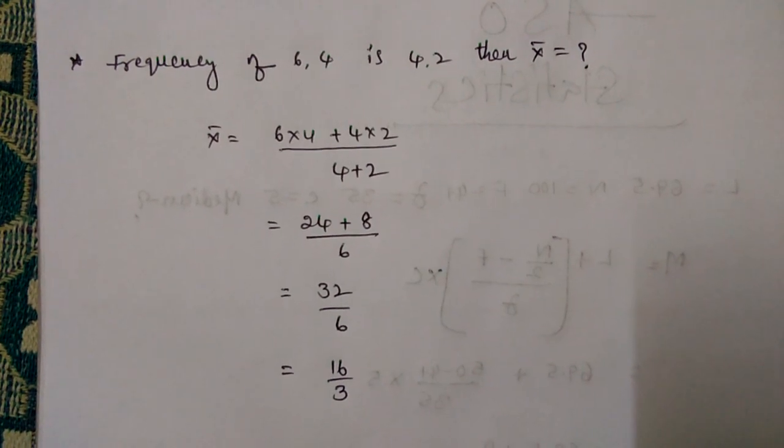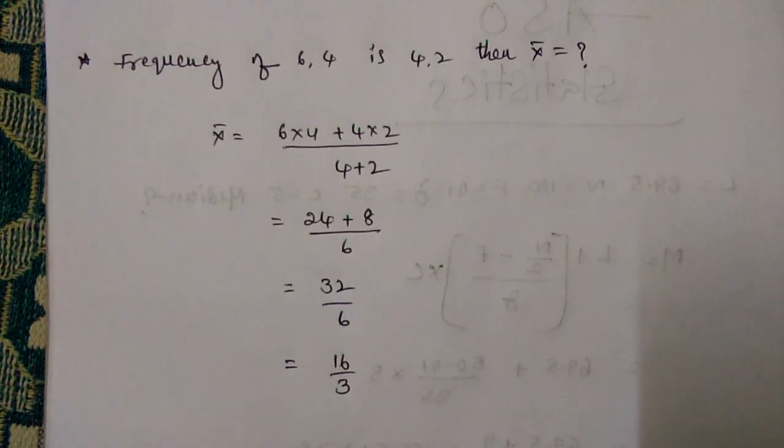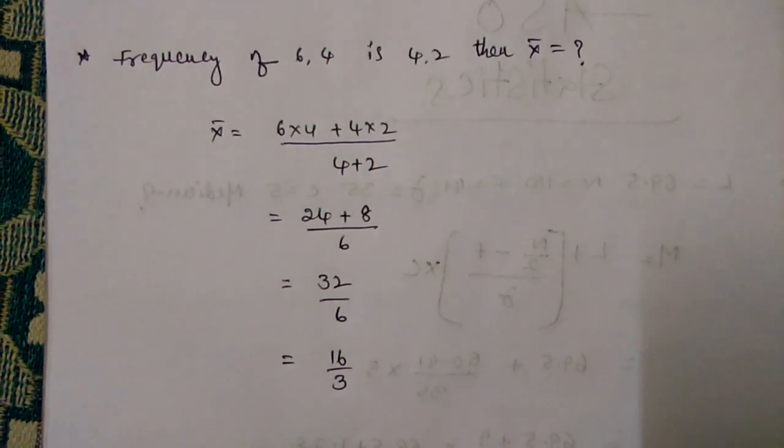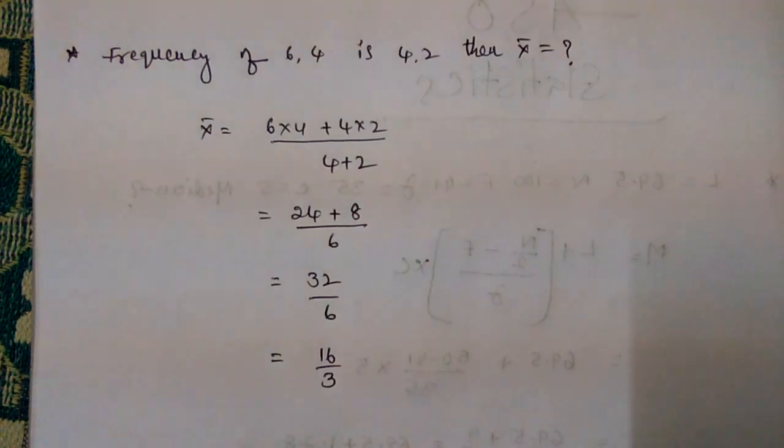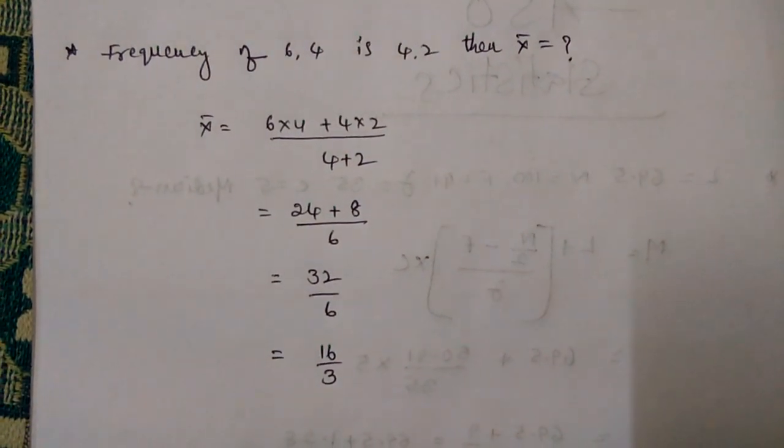One more problem: frequency of 6, 4 is 4, 2, then x bar equals? So actually here x bar equals 6 into 4 plus 4 into 2, divided by 4 plus 2.